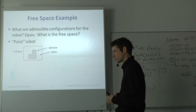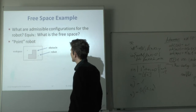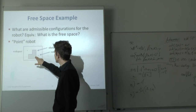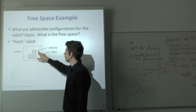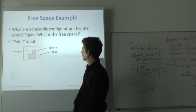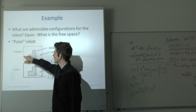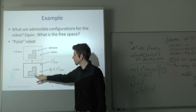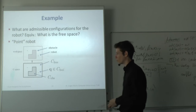Consider a simple environment with a point robot. The locations where the robot is allowed to be are anywhere on the white surface — not in the obstacle. So the white area is free space, the obstacle is obstacle space, and any valid configuration lies in free space. Now, of course, robots are not points. If we have a disc-shaped robot, the obstacle space gets larger because the robot can't be too close to the obstacle.